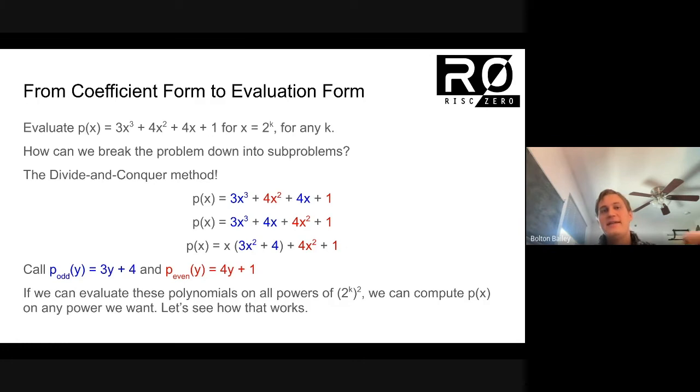The central idea is that if we can evaluate these polynomials for all of the powers of two to the k squared, because for the original polynomial we wanted to evaluate it on x equals two to the k, for these polynomials we want to evaluate it on y. And if y is x squared, then we want to evaluate these polynomials on powers of two to the k squared. And what we'll show is that if we can do that, then we can basically compute p of x on any power we want.